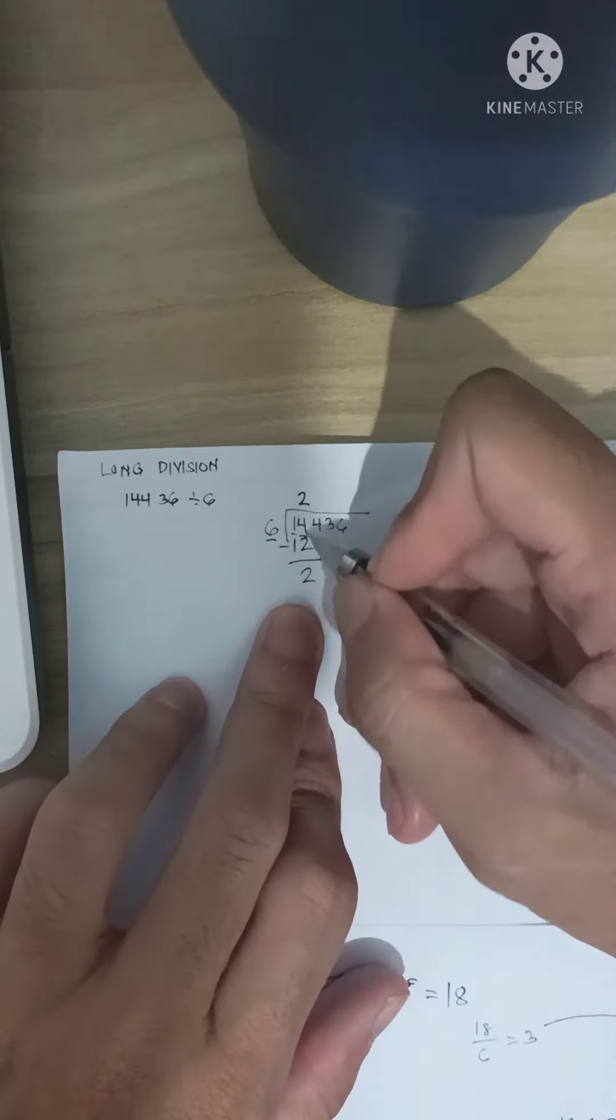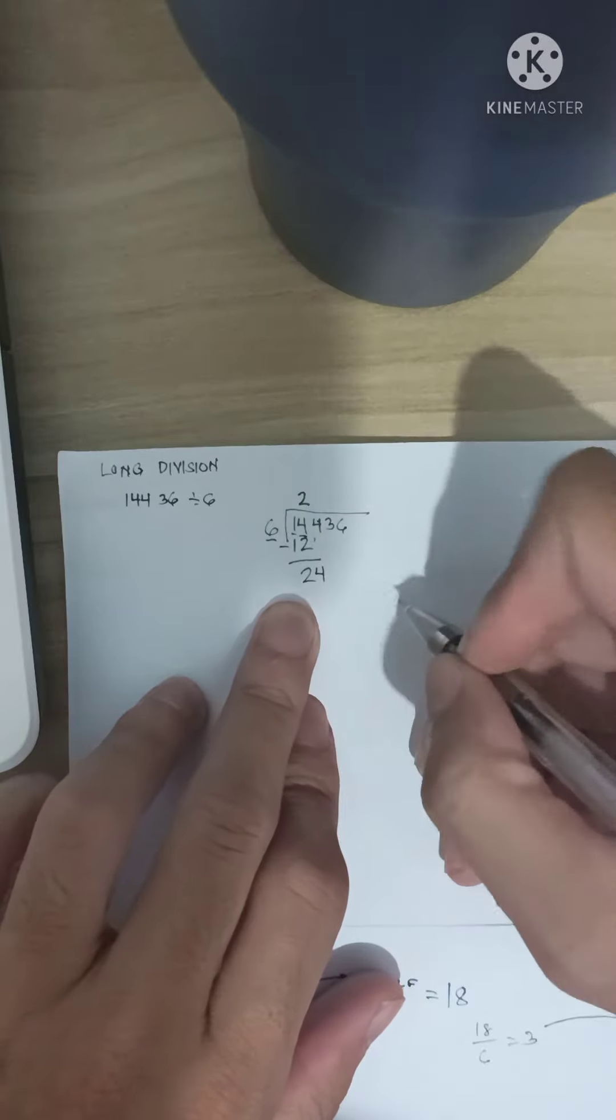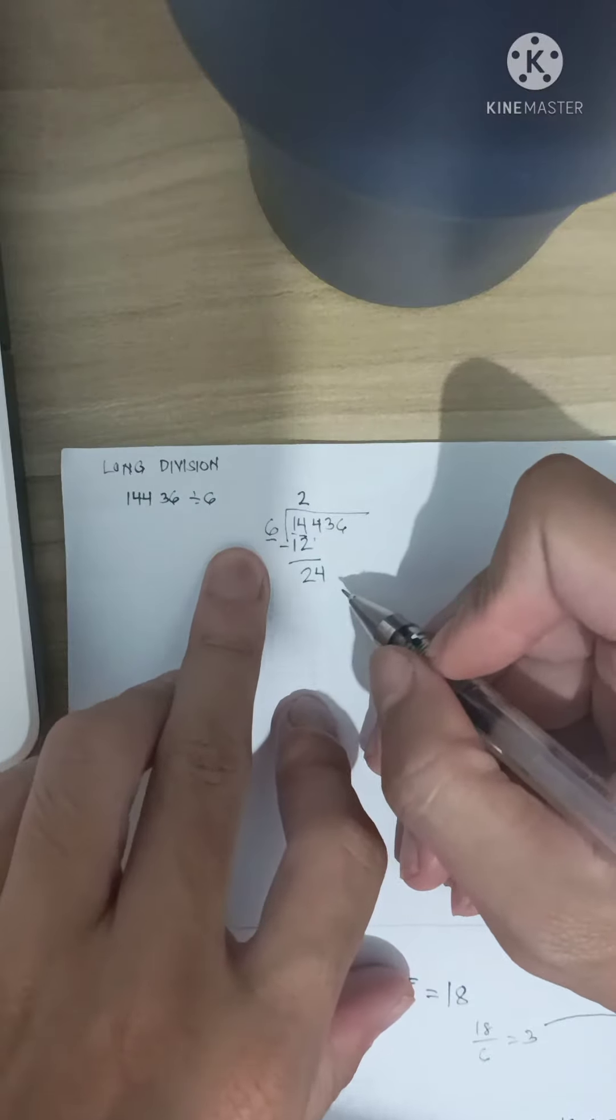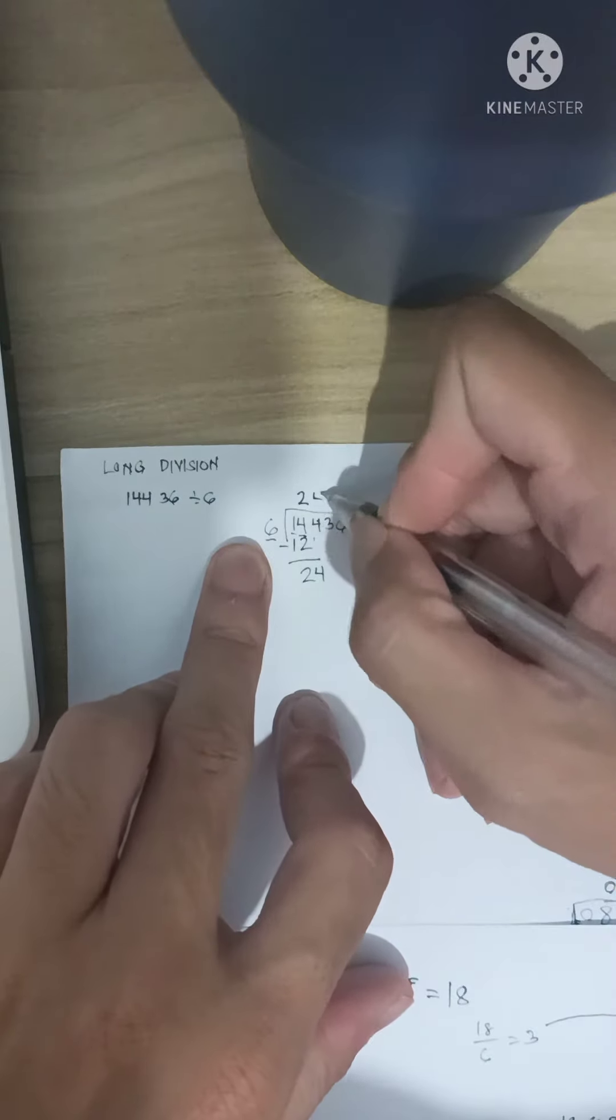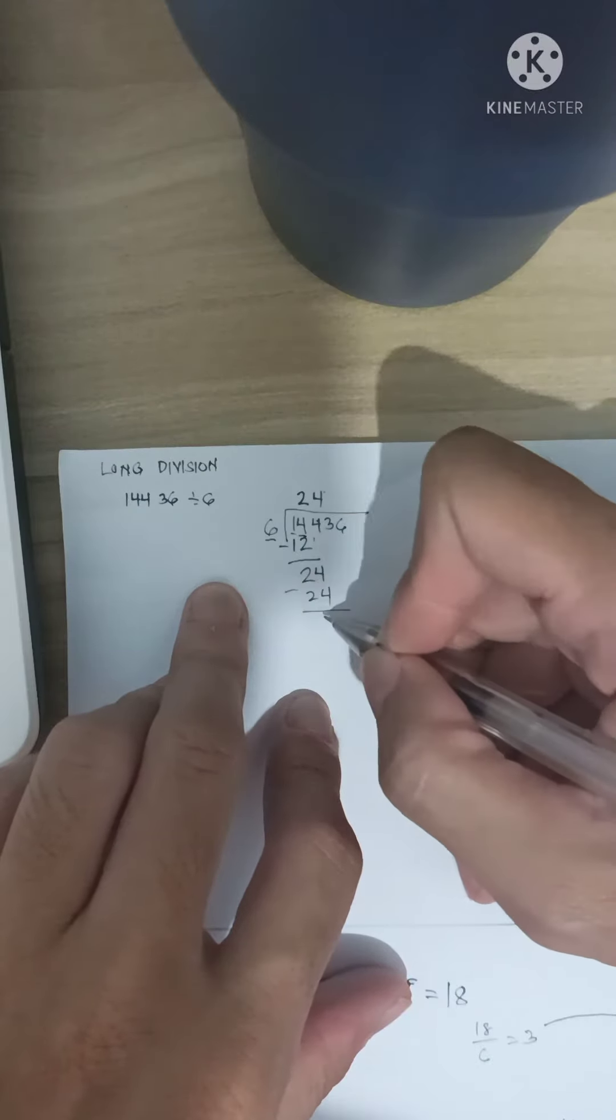And then, after we subtract, we bring down the next number. 4. 24 divided by 6 is 4. 4 times 6 is 24. We subtract, 0.